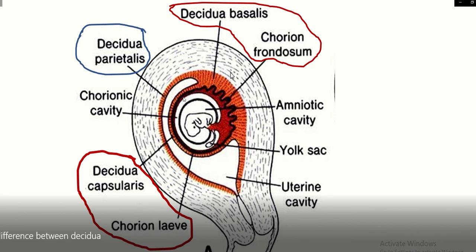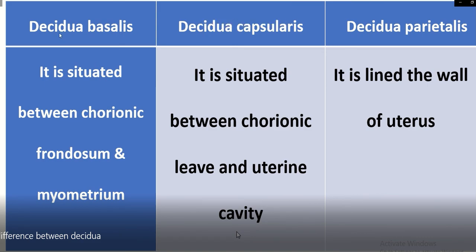Outside the chorion is the decidua — decidua capsularis and parietalis — and this is decidua basalis. In between decidua capsularis and decidua parietalis is the uterine cavity. So: decidua basalis is situated between the chorionic frondosum and the myometrium; decidua capsularis is situated between the chorionic laeve and the uterine cavity; and decidua parietalis lies in the wall of the uterus.